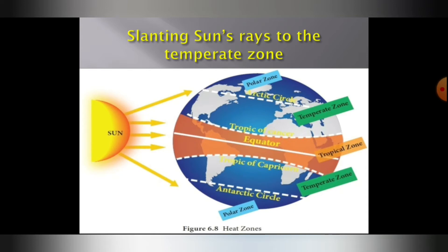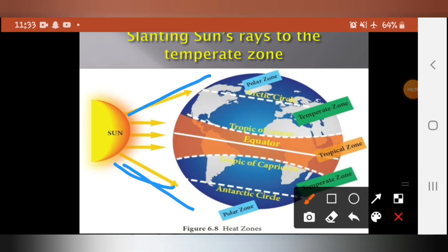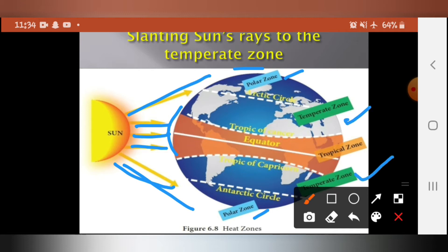You can see the sun's rays falling slantingly on the temperate zone, whereas in the torrid zone, the rays fall directly. Direct heat falls on the torrid zone, while slanting rays fall on the temperate zone. The angle of the sun's rays goes on decreasing towards the poles. Thus, the temperate zone experiences moderate temperature.